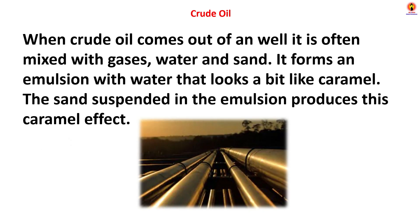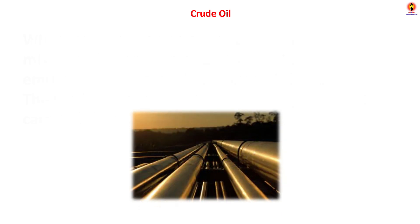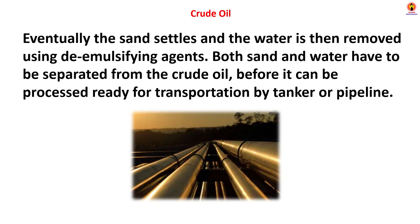When crude oil comes out of a well, it is often mixed with gases, water and sand. It forms an emulsion with water that looks a bit like caramel. The sand suspended in the emulsion produces this caramel effect. Eventually the sand settles and the water is then removed using de-emulsifying agents. Both sand and water have to be separated from the crude oil before it can be processed and made ready for transportation by train or pipeline.